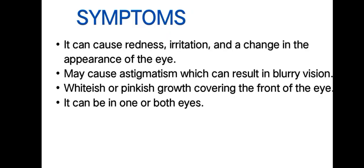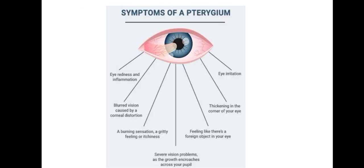Symptoms. Pterygium can cause redness, irritation, and a change in the appearance of the eye. It may cause astigmatism, which can result in blurry vision. There may also be a whitish or pinkish growth covering the front of the eye, which can occur in one or both eyes. The following symptoms are also explained in this picture.